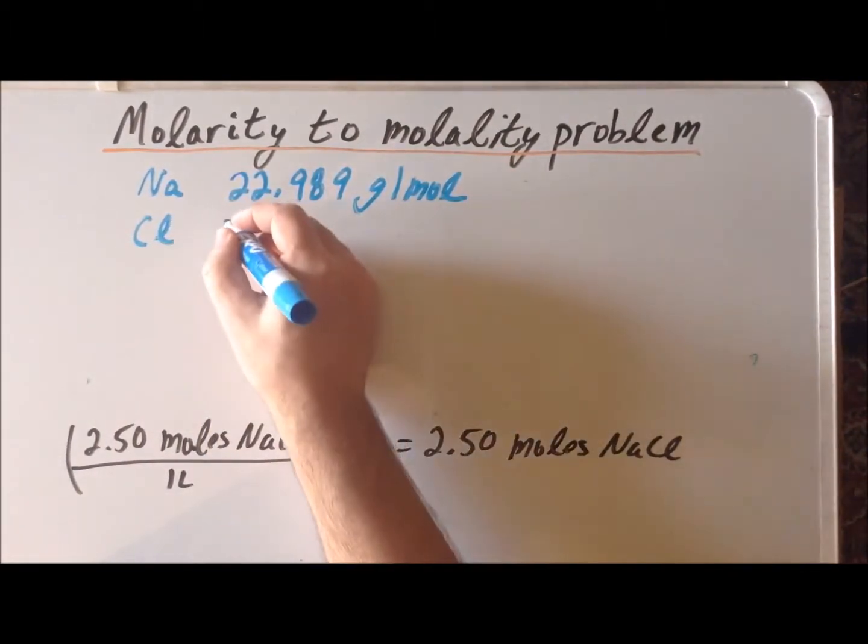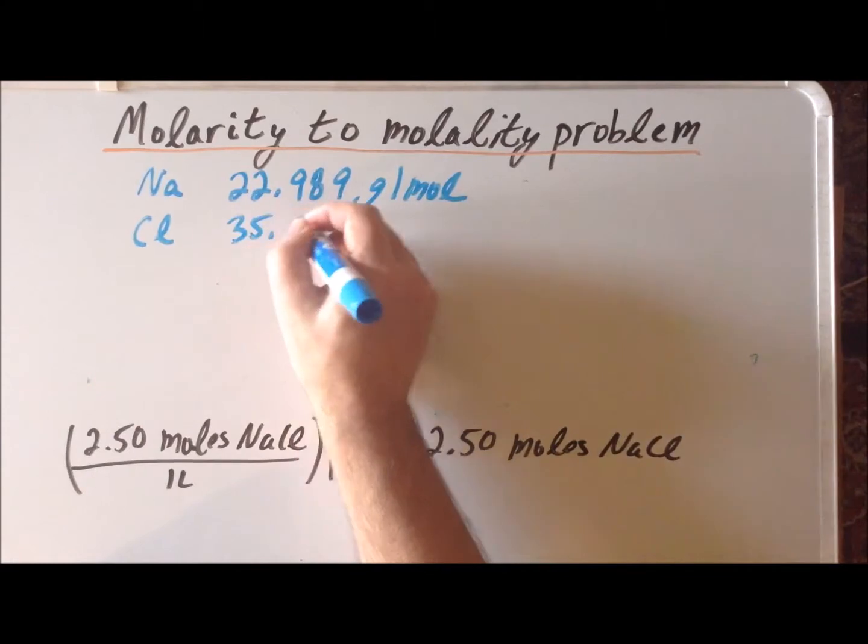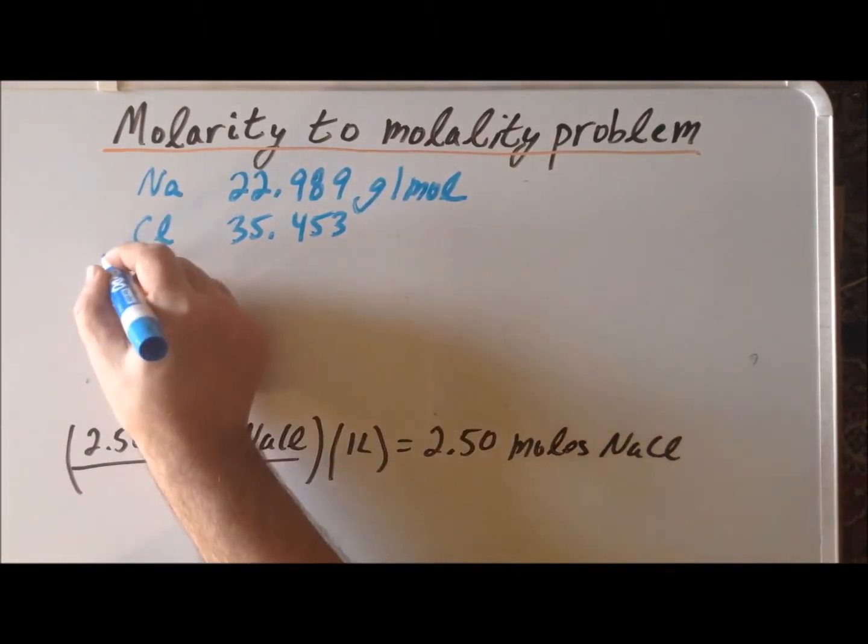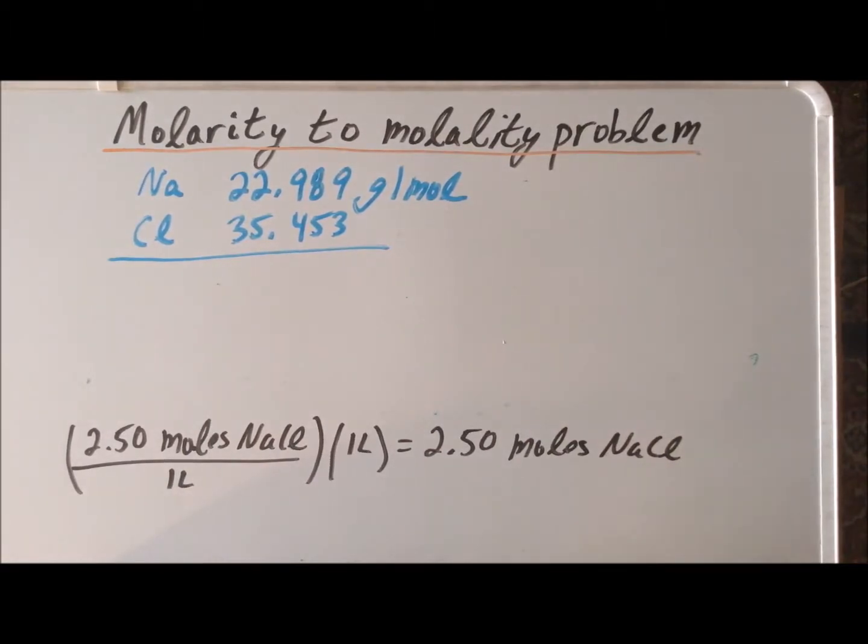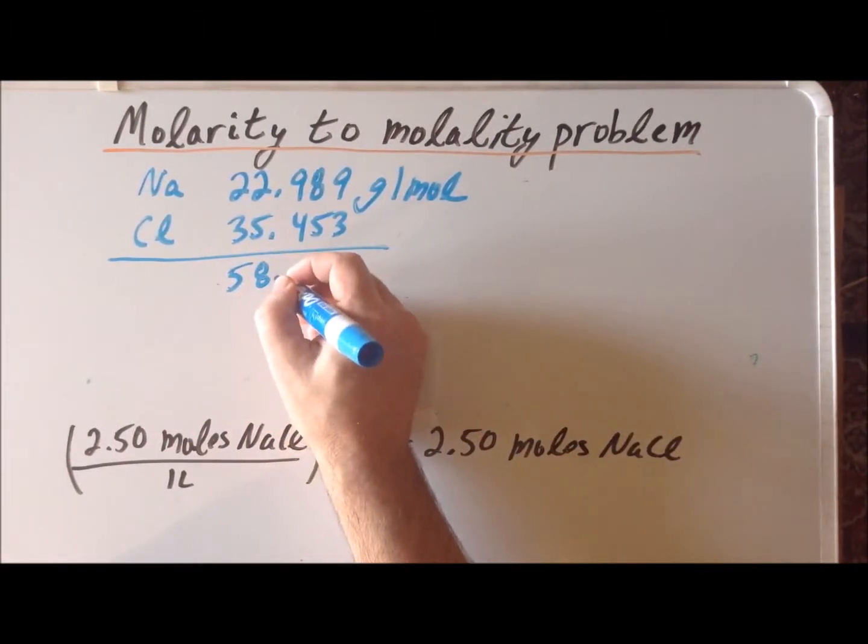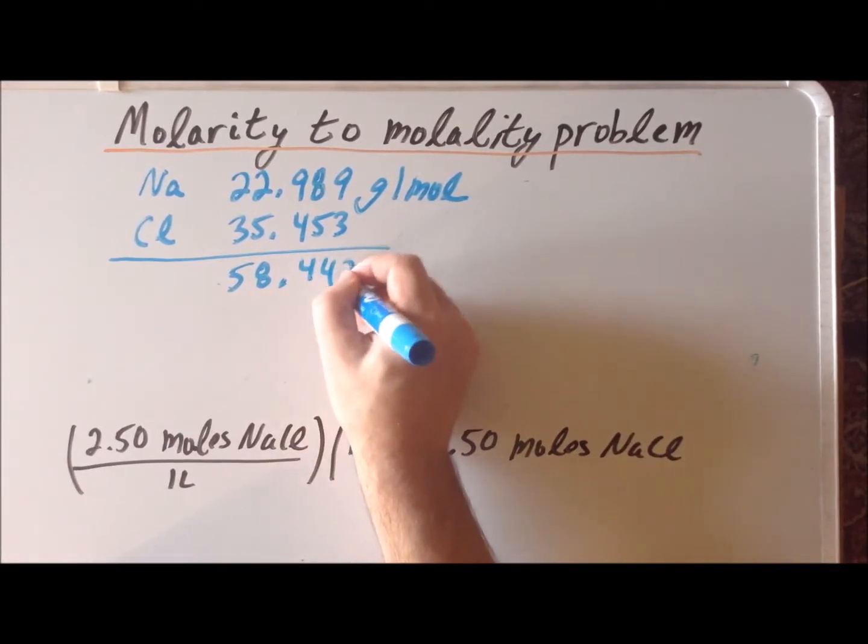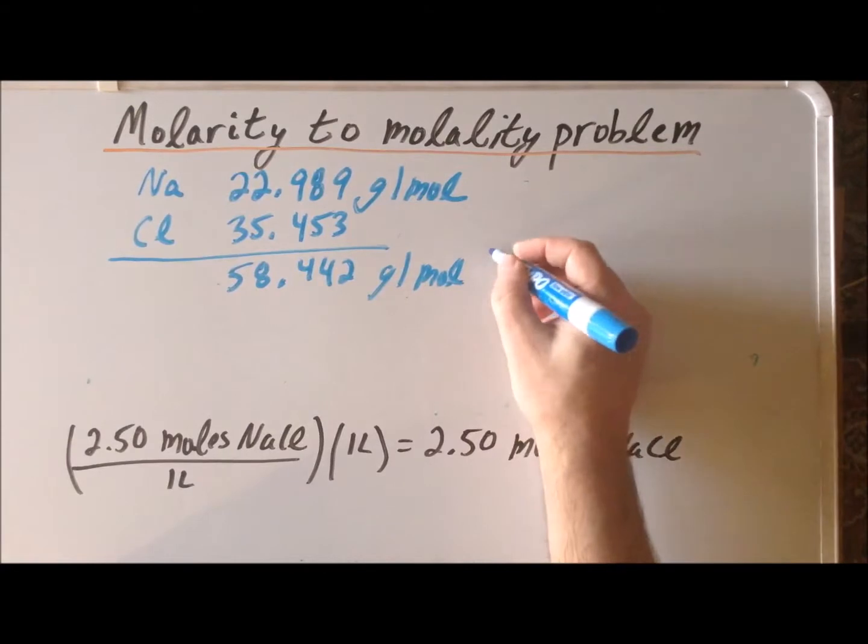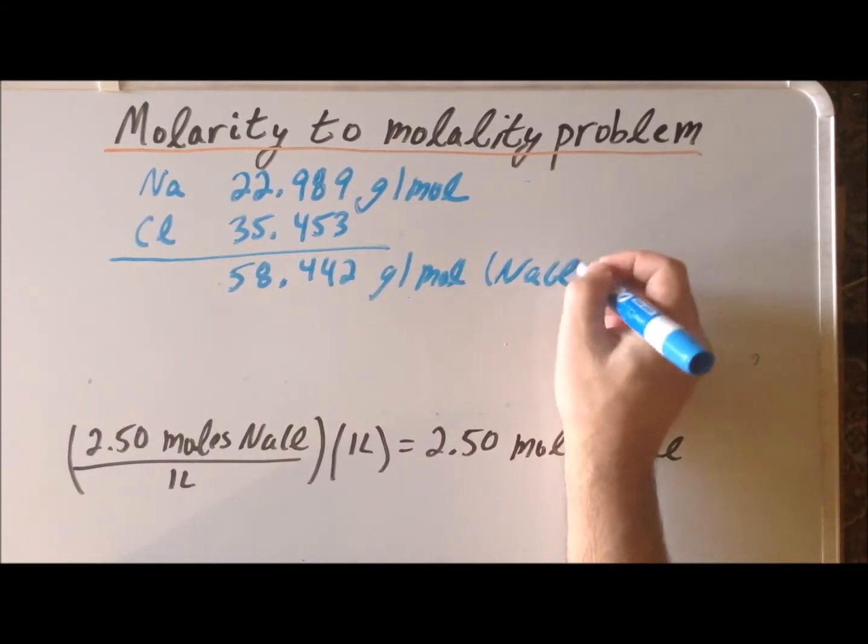So to get the molar mass of sodium chloride, we add these together and get 58.442 grams per mole of sodium chloride. This is the molar mass of sodium chloride.